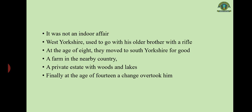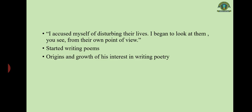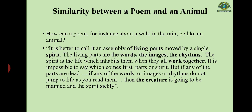Finally, at the age of 14, a significant change overtook him. He says: 'I accused myself of disturbing their lives. I began to look at them from their own point of view.' This is perhaps the first step towards maturity — from actually capturing animals, he moved towards understanding them. He himself says in Poetry in the Making that the origins and growth of his writing poetry began at that very age.